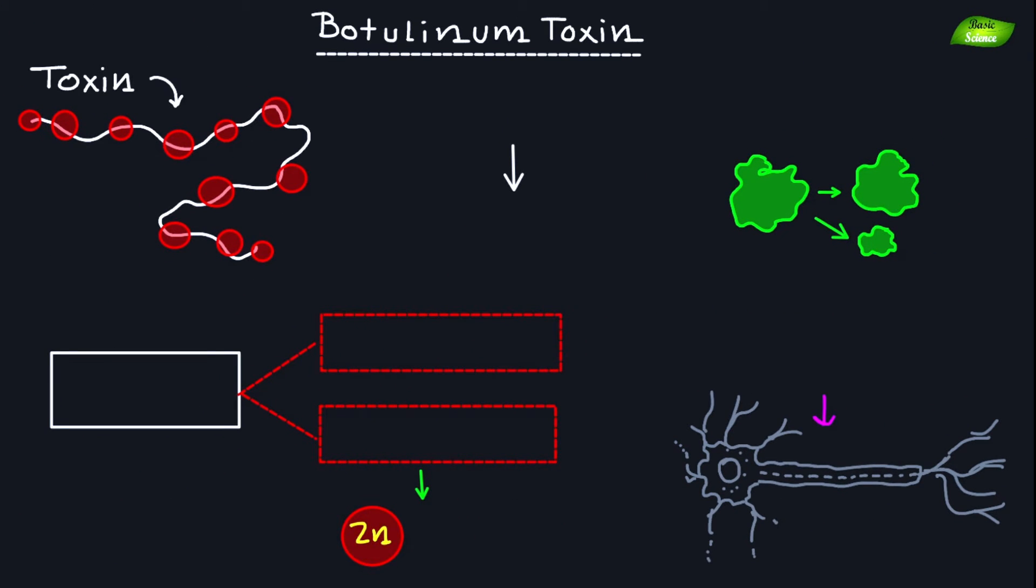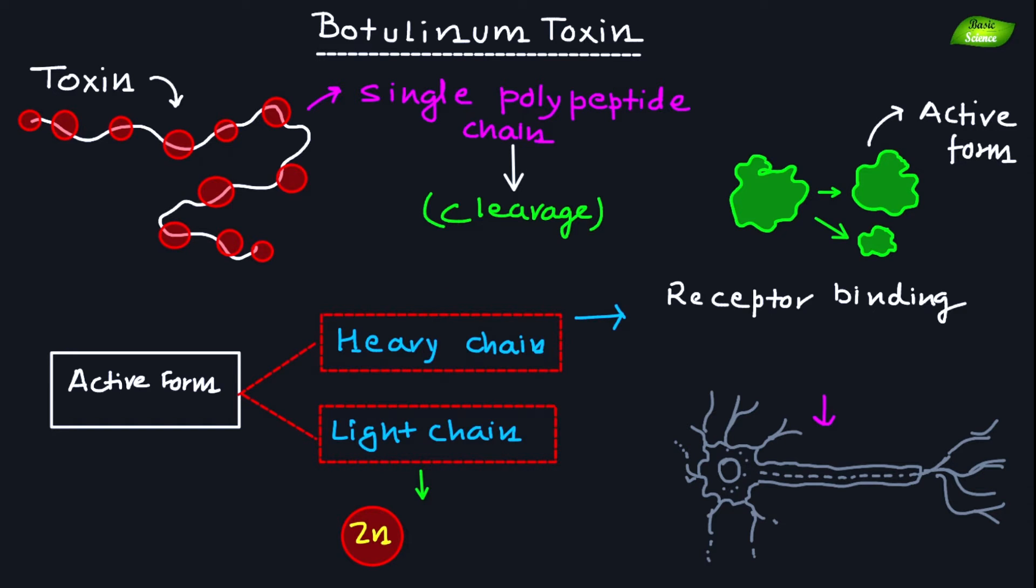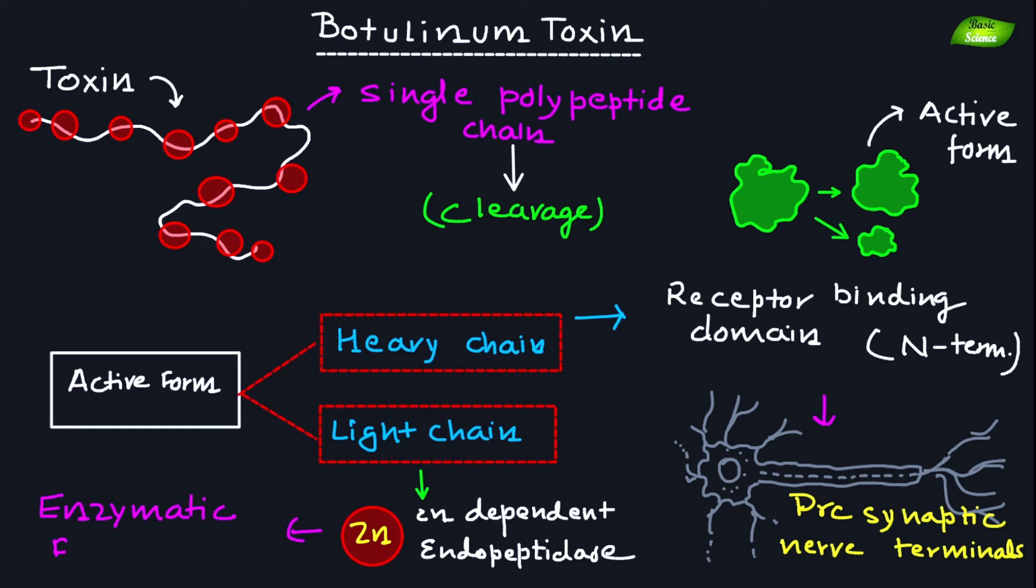Botulinum toxin is produced as a single polypeptide chain that undergoes proteolytic cleavage to produce the active form. The heavy chain contains a receptor binding domain at its C-terminus, which facilitates toxin binding to presynaptic nerve terminals. The light chain possesses zinc-dependent endopeptidase activity, which is responsible for the enzymatic function of the toxin.